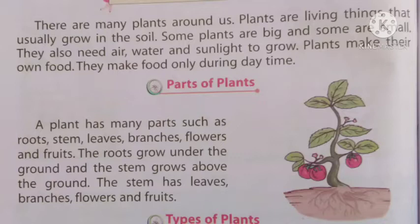The roots grow under the ground and the stem grows above the ground. जो roots होते हैं, जड़ होती हैं, वो हमेशा जमीन के नीचे होती हैं। और जो हमारा stem होता है, तना, यह हमेशा जमीन के ऊपर की तरफ बढ़ता है। The stem has leaves, branches, flowers and fruits. Stem के पास leaves, branches (शाखाएँ), flowers और fruits होते हैं।